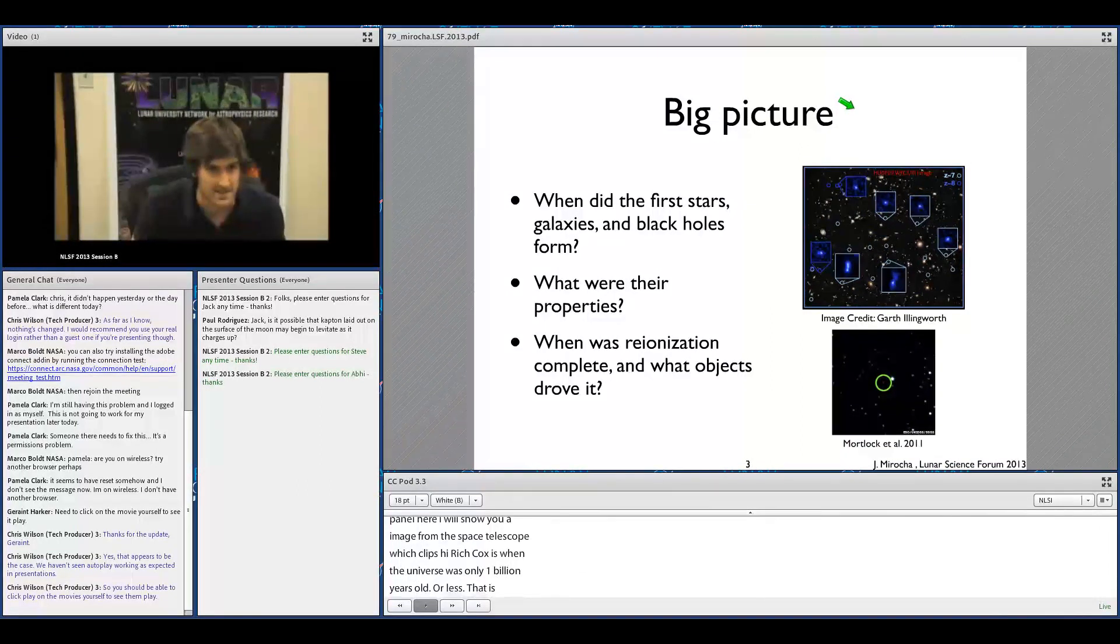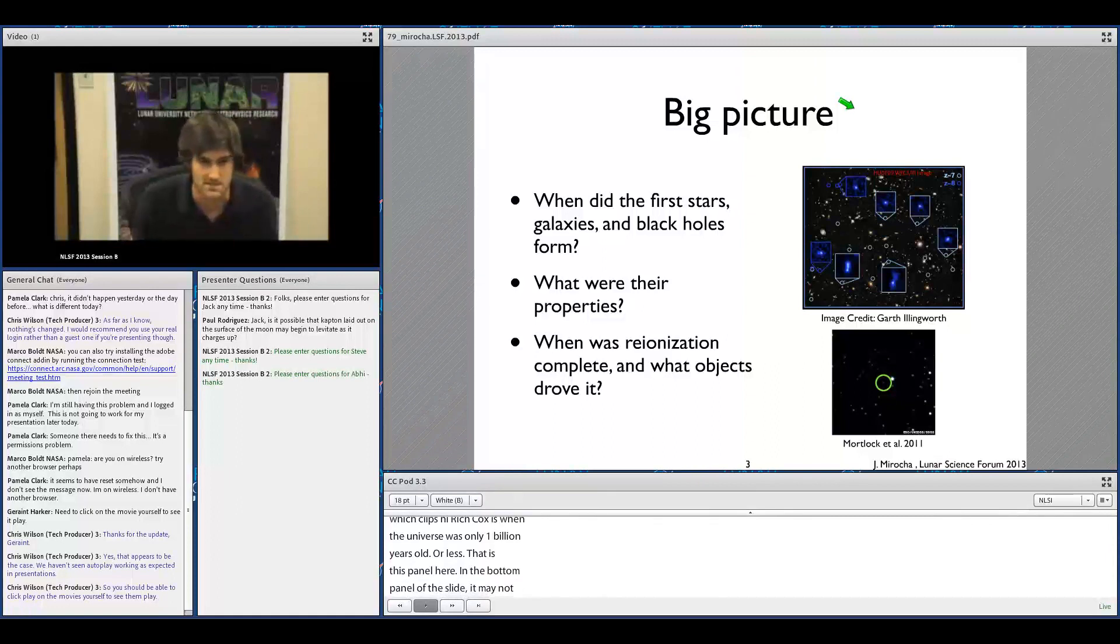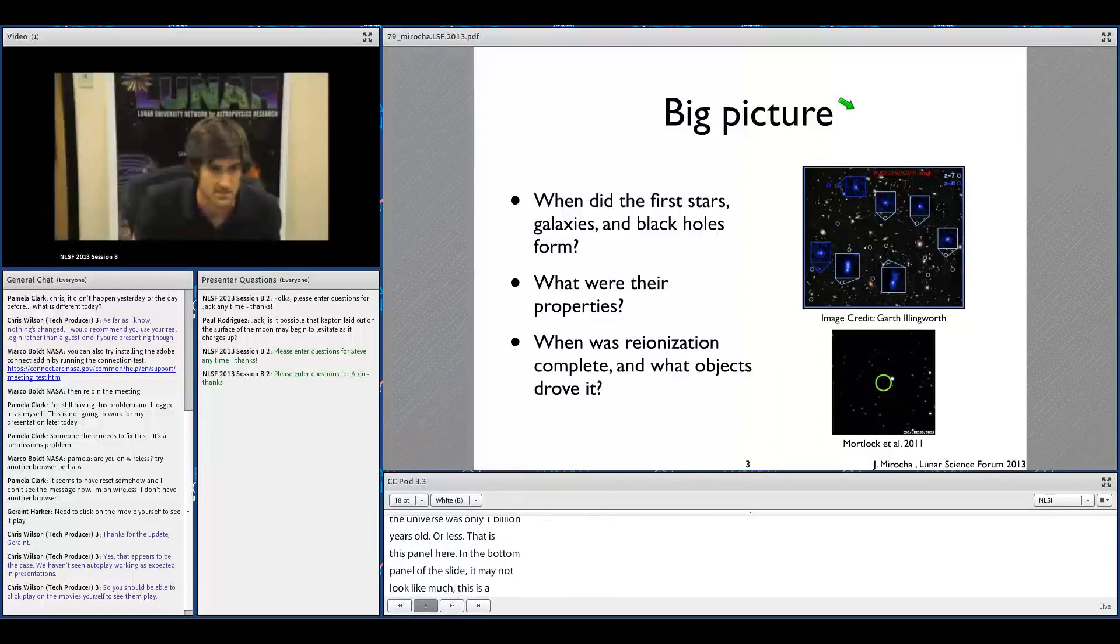And in the bottom panel of this slide, it may not look like much, but this is actually a quasar at redshift seven. So we know that supermassive black holes must exist when the universe was less than a billion years old. As Jack mentioned, these questions were highlighted by the decadal survey.